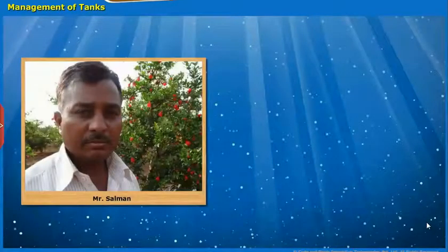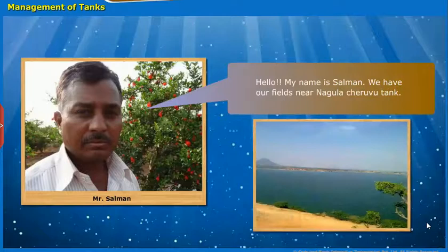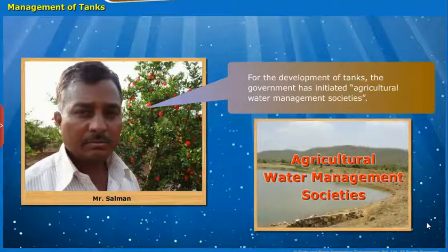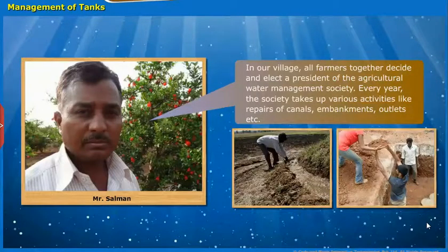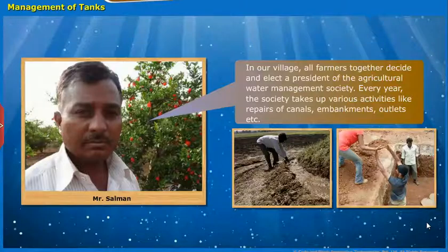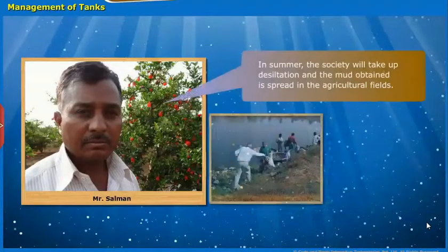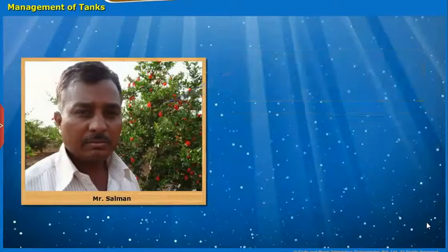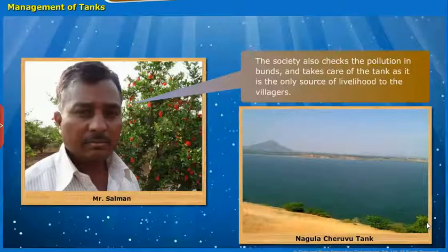Here, let us know how Nagula Chiruvu tank management is carried out through a villager's own words. Hello, my name is Salman. We have our fields near Nagula Chiruvu tank. For the development of tanks, the government has initiated agricultural water management societies. In our village, all farmers together decide and elect a president of the Agricultural Water Management Society. Every year, the society takes up various activities like repairs of canals, embankments, outlets, etc. In summer, the society takes up decantation and the mud obtained is spread in the agricultural fields. The society also checks the pollution in bunds and takes care of the tank as it is the only source of livelihood to the villagers.